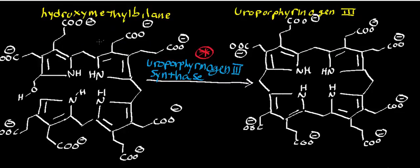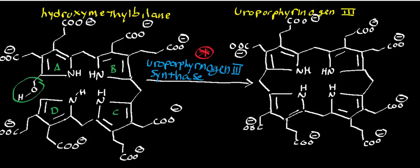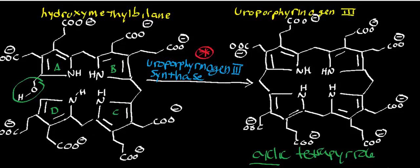Notice how hydroxymethylbilane has not been completely cyclized — you still have this hydroxymethyl group that sticks off of the A ring. If we label the pyrrole rings, this is A, B, C, and D — that's the convention for porphyrins and corrins. Uroporphyrinogen 3 synthase is going to, number one, cyclize it into what we call a cyclic tetrapyrrole. Hydroxymethylbilane is a tetrapyrrole but not cyclic — it's basically a chain. The other thing this enzyme does is invert the D ring.